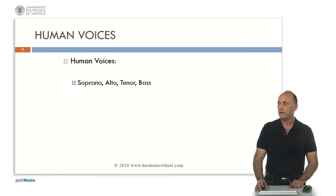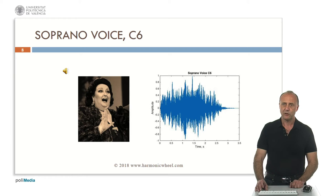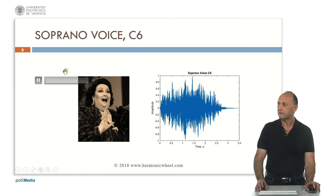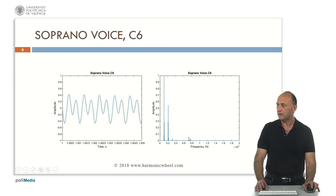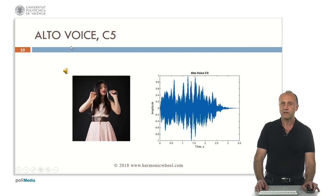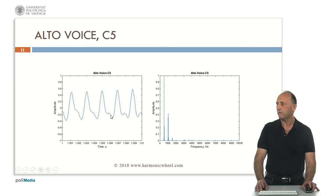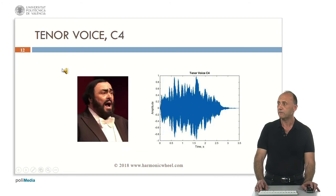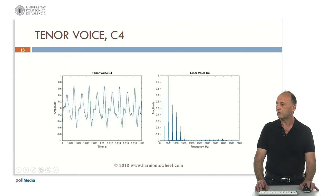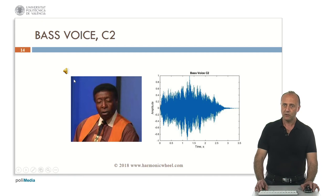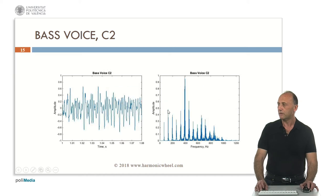Now let's analyze the human voices. This is a soprano at note C6, which is very high. This is the envelope, the waveform, and the spectrum. Then the alto voice, C5 — the envelope, the waveform, and the spectrum. Tenor voice, C4 — envelope, waveform, and spectrum. Bass voice, C2, a very low note. This is the envelope. The spectrum is very complex and contains many harmonics.